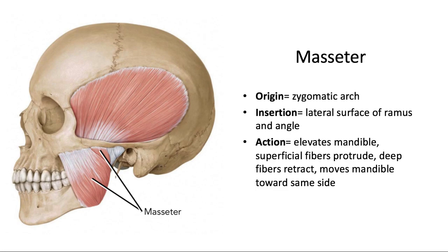If a masseter muscle is activated only on one side, it can move the mandible toward that side. So if the left masseter activates, it moves the mandible to the left. Another way to say this is that unilateral action produces ipsilateral excursion — that's lateral movement toward the same side.